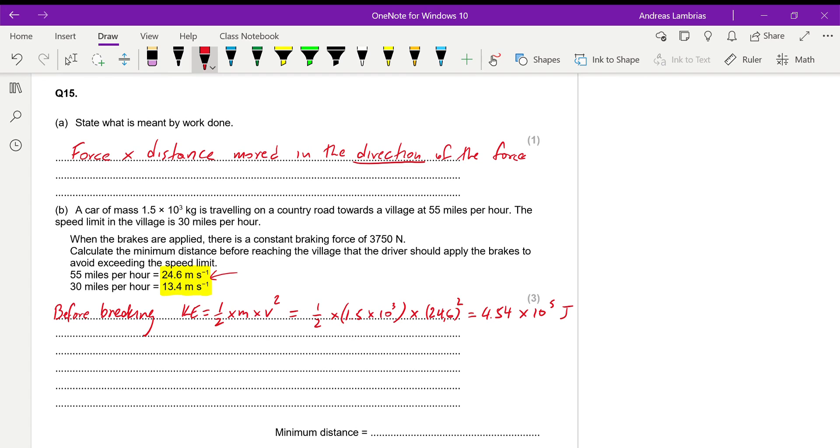Now, when the brakes are going to be applied, we want the car to be at 30 miles per hour, at 13.4 meters per second. So after braking, the kinetic energy of the car should be 1.5 times 10 to the power of 3, which is the mass, times the new velocity, which is 13.4. So the new kinetic energy after braking should be 1.35 times 10 to the power of 5.